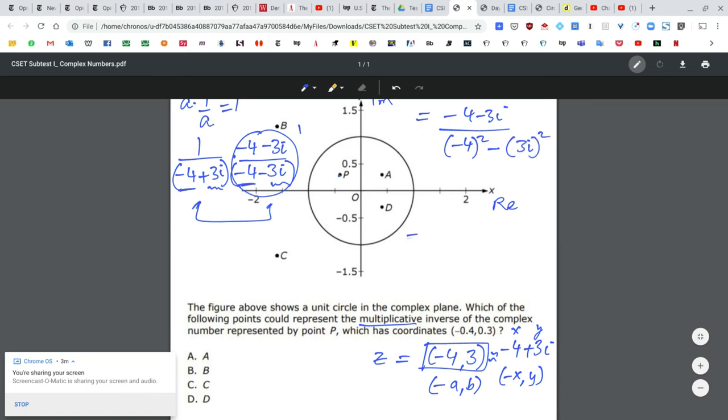I'm going to simplify that. So you have negative 4 minus 3i all over. Negative 4 squared is 16 minus 3 squared is 9, and then i squared is negative 1. Do not forget, i squared is negative 1 for complex numbers or imaginary numbers. So the denominator really becomes 16 plus 9, which is 25.